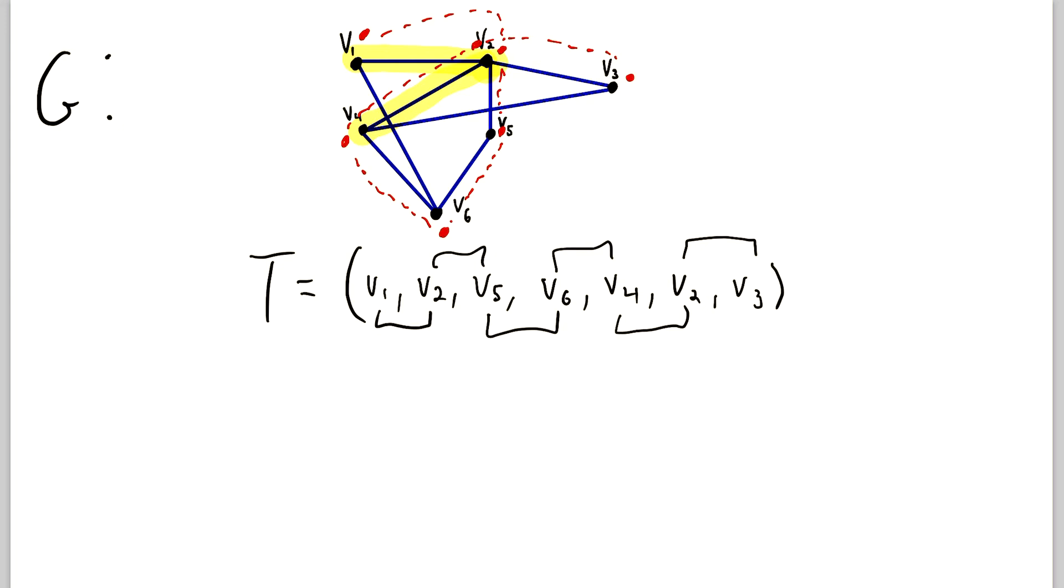And all of the same vocab we used with walks, you can also use with trails. So, for example, we can say that our trail T is an open trail, because the first and last vertices are distinct. Also, you can refer to the first and last vertices as endpoints. So because the endpoints of the trail are distinct, we can say that it is an open trail.